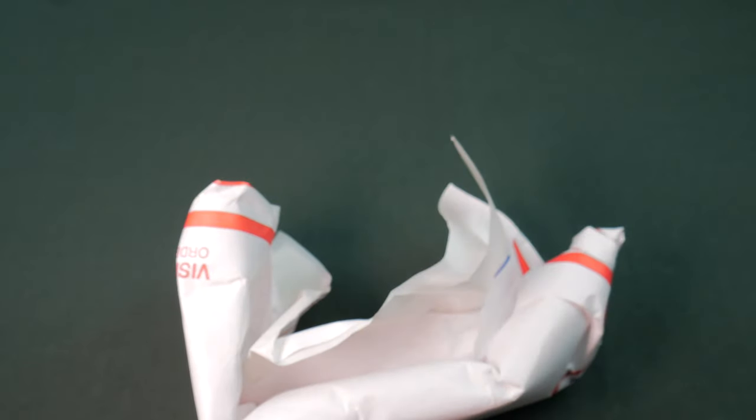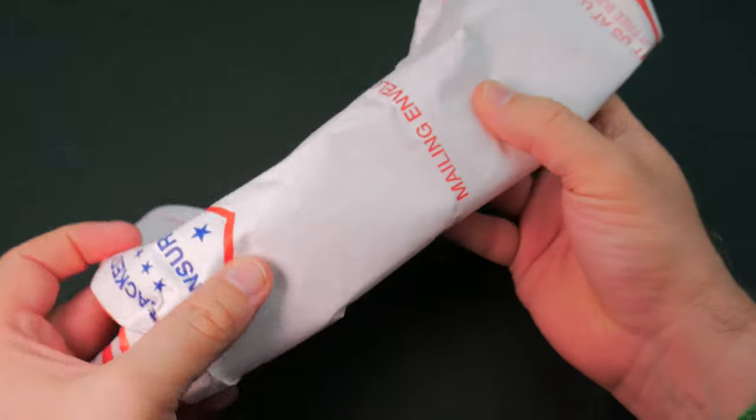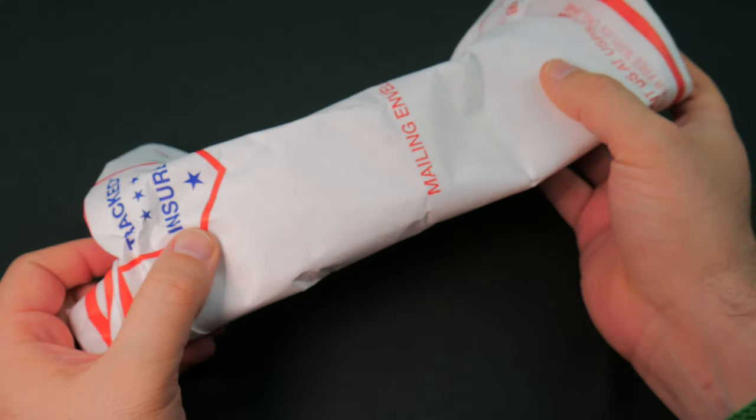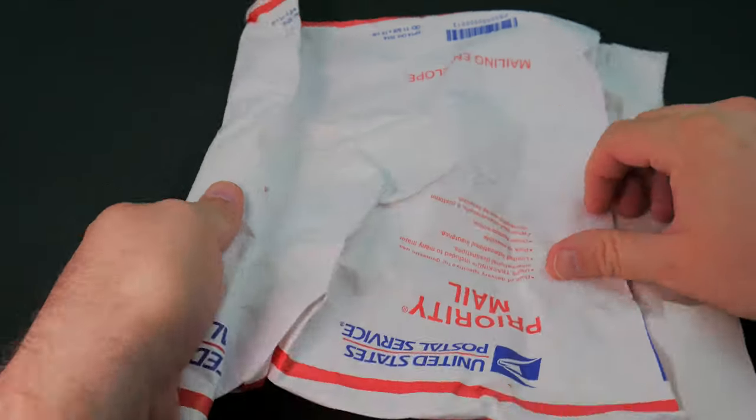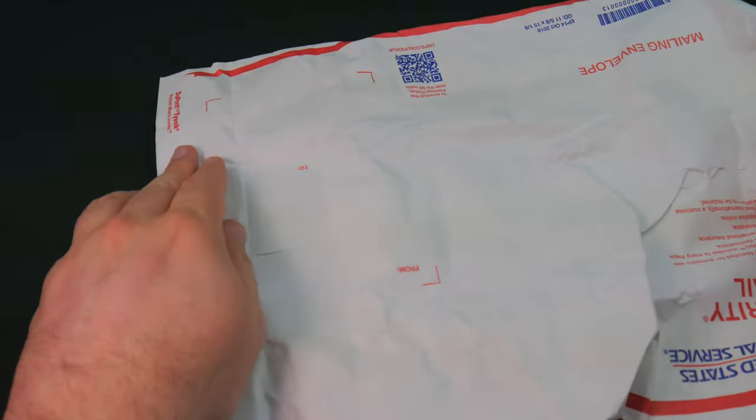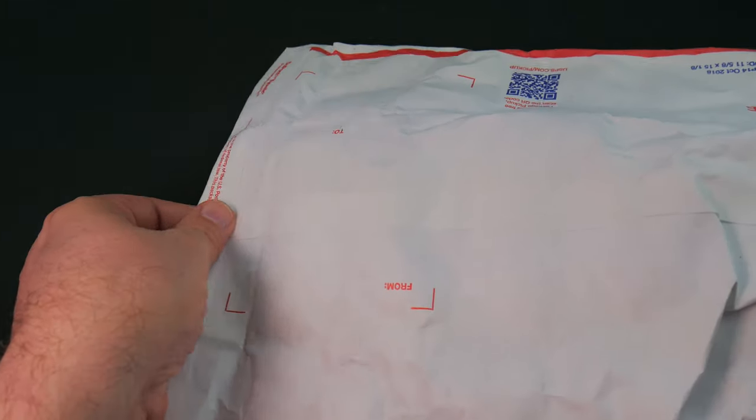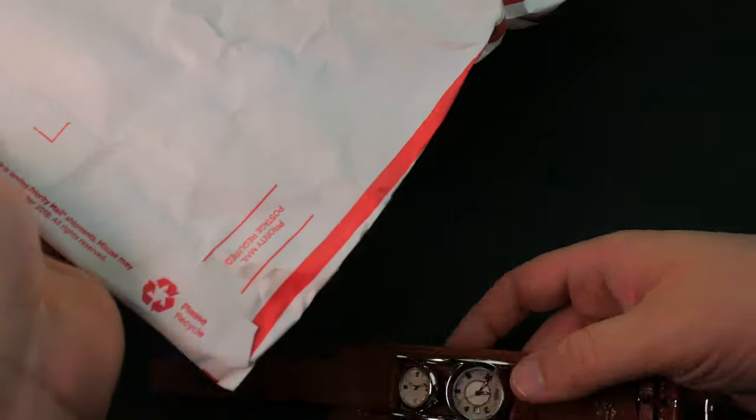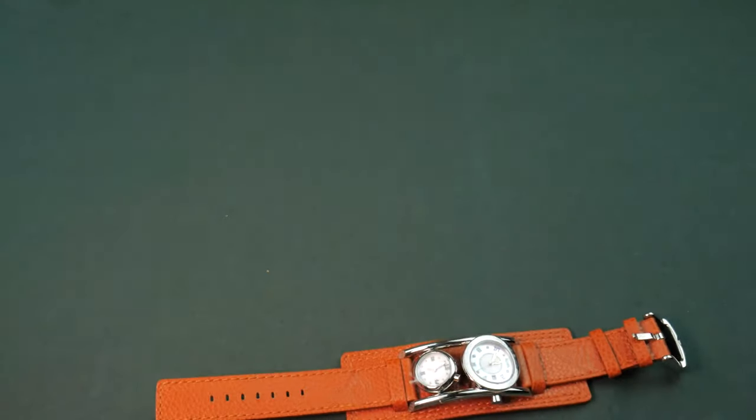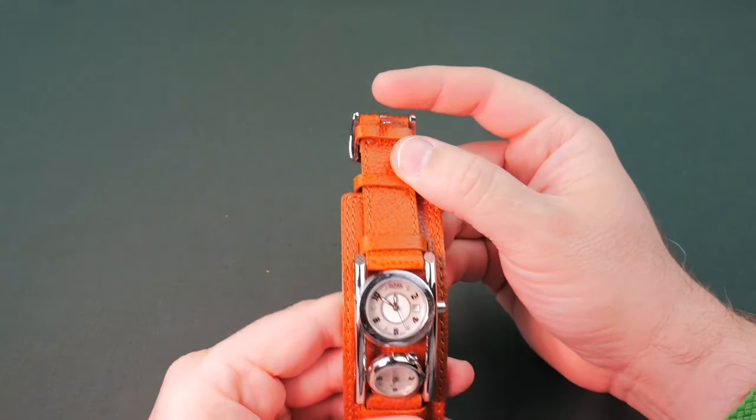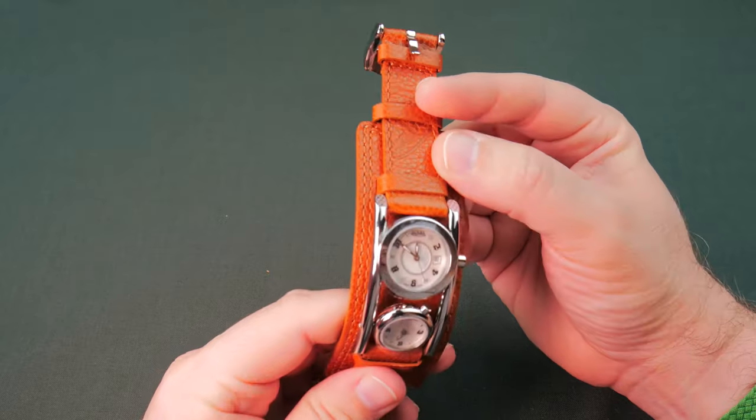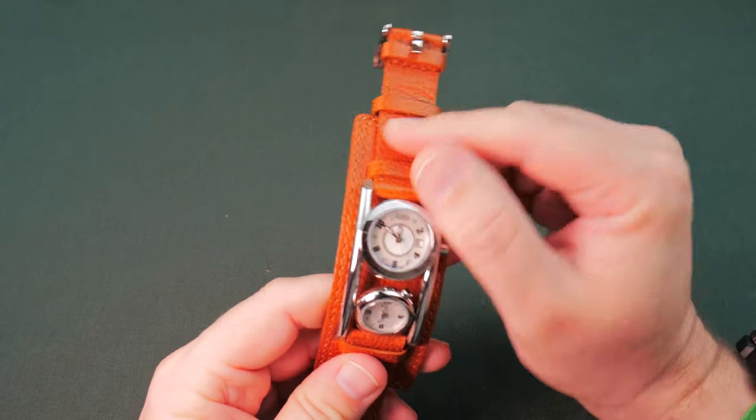We've got a ghetto wrap job for sure. I have a feeling I know what this is given the ghetto wrap job, because I did order a watch that did not come with a box. I'm betting that is this. And that is what it is. A ghetto wrapped Von Dutch.